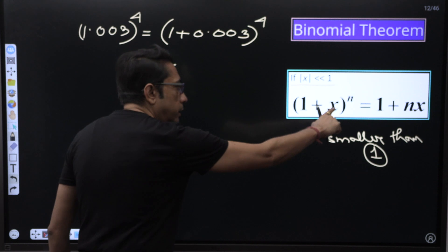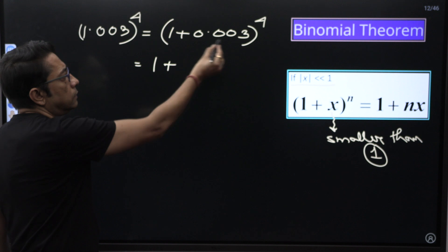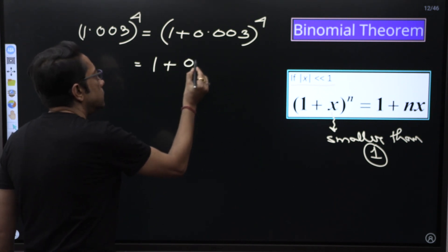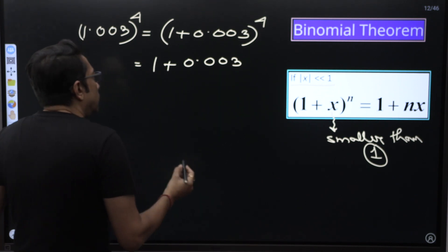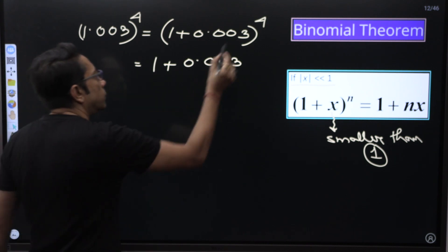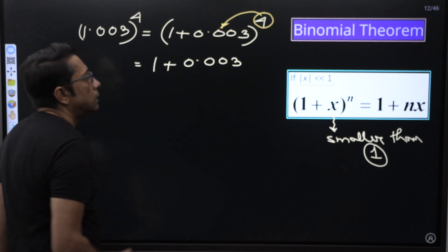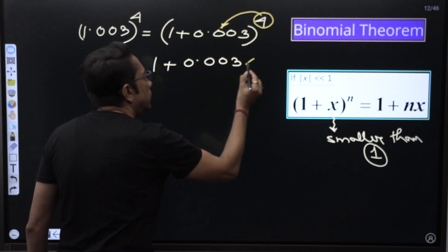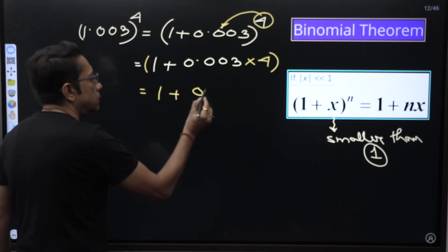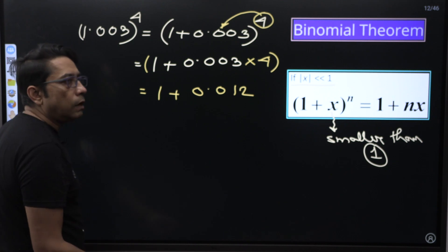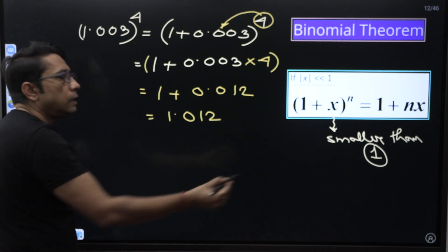Since 0.003 is very, very smaller than 1, we can apply the binomial approximation. So we put the value: 1 plus 4 multiplied by 0.003. That gives 1 plus 0.012, which simply becomes 1.012. That is the answer. You can check it on a calculator.